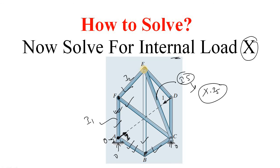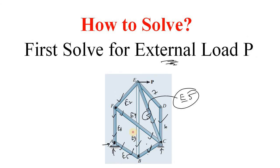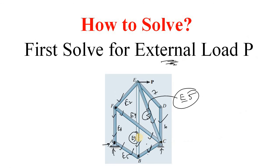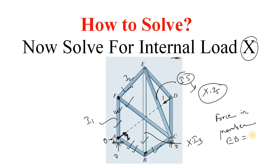Consider member EB as an example — its axial force due to external load is E3, and due to internal unit load is I3. For internal load X, it becomes X times I3. So the total axial force in member EB is E3 plus X times I3. Everything here is known — E3 and I3 — except X.